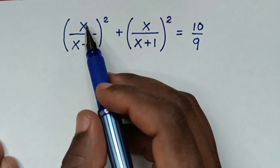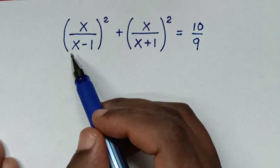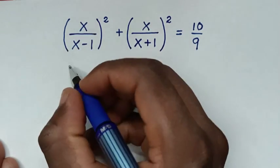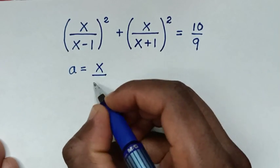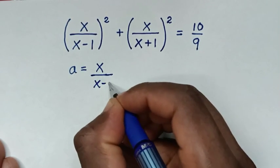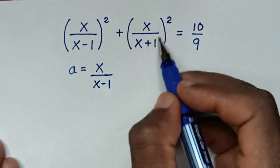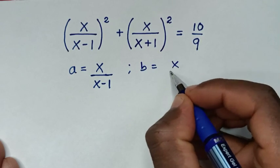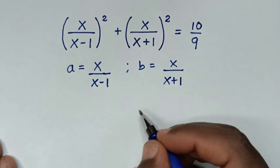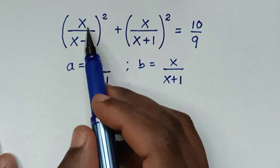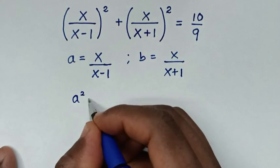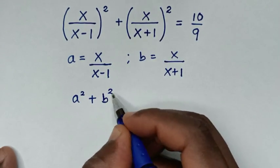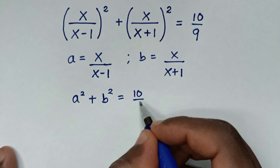In the first step, we let the expression inside the bracket, x over (x minus 1), equal a. So a is equal to x over (x minus 1). And this expression x over (x plus 1), we let equal b. So b is equal to x over (x plus 1). Then substituting, we have a squared plus b squared is equal to 10 over 9.